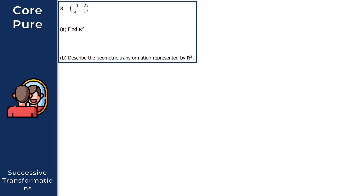Let's get started with question 1. We're given this 2×2 matrix R, where R equals [[-1, 2], [2, 1]]. For the first part of this question, we need to find R squared. R squared represents successive transformations because we're applying R to itself again. So R squared is this matrix R times itself.